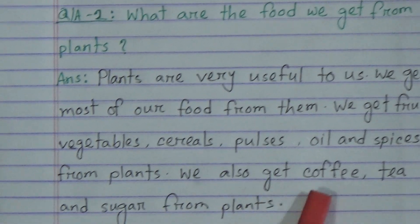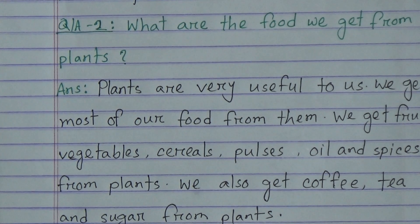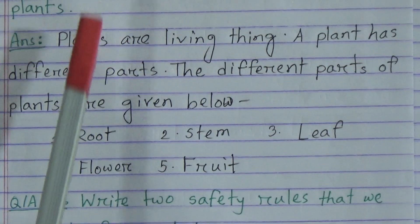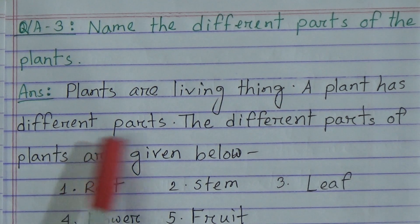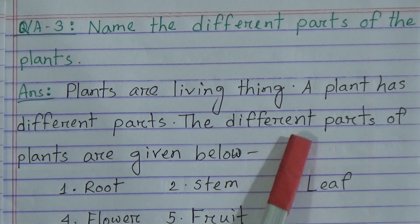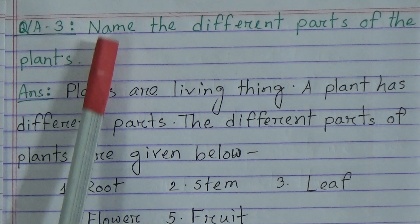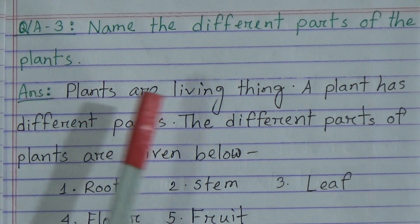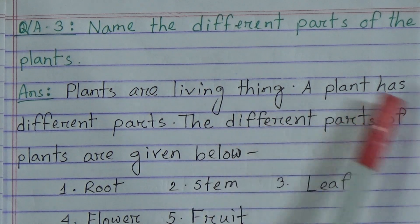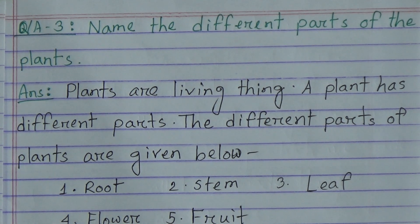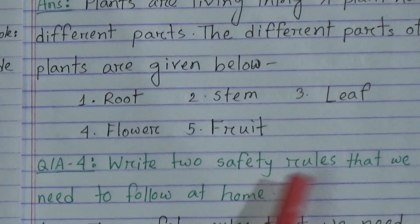Question answer number three: Name the different parts of the plants. Answer: Plants are living things. A plant has different parts. The different parts of plants are: root, stem, leaf, flower, and fruit.